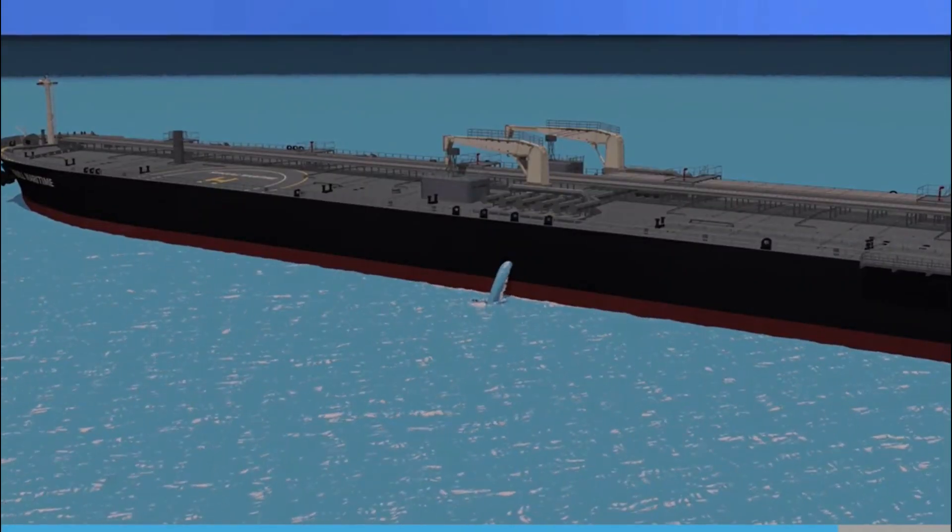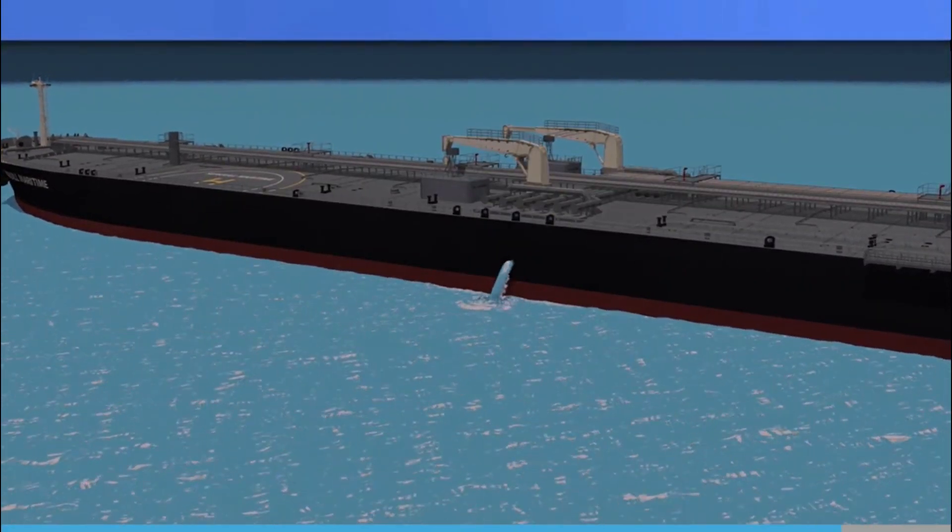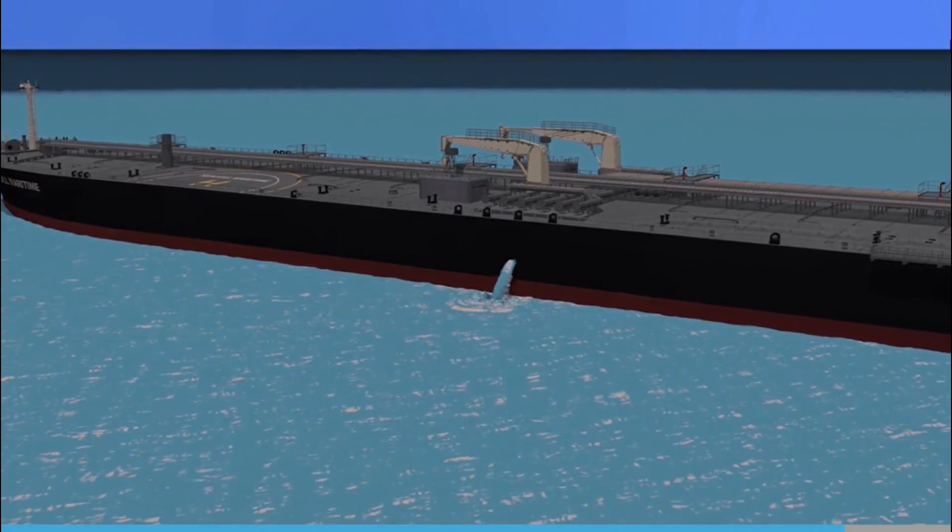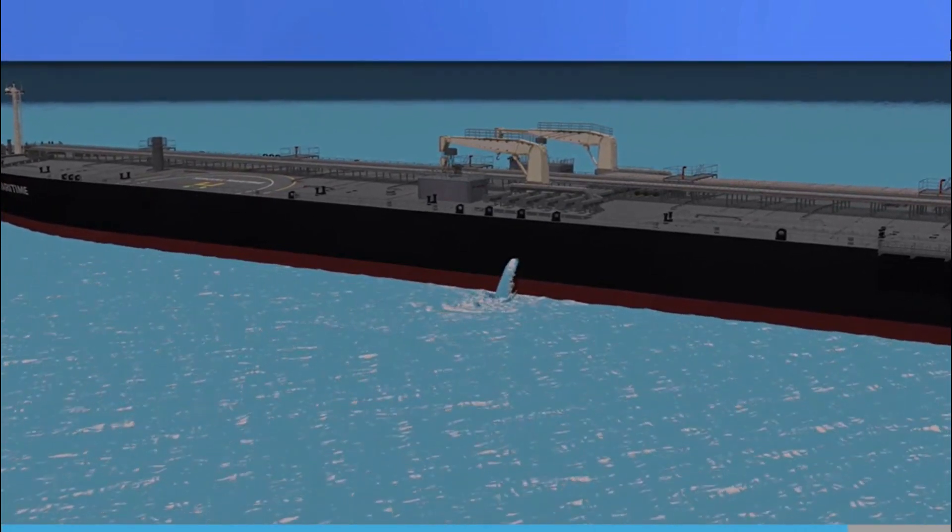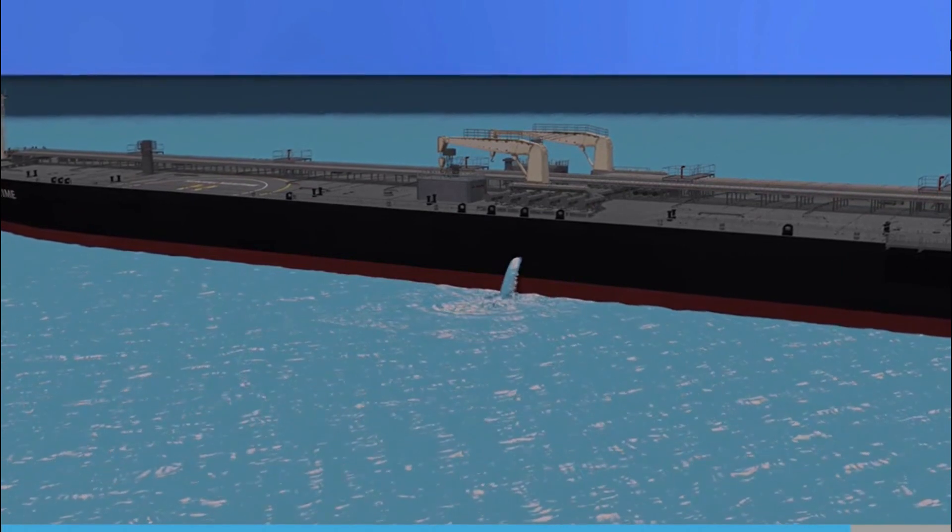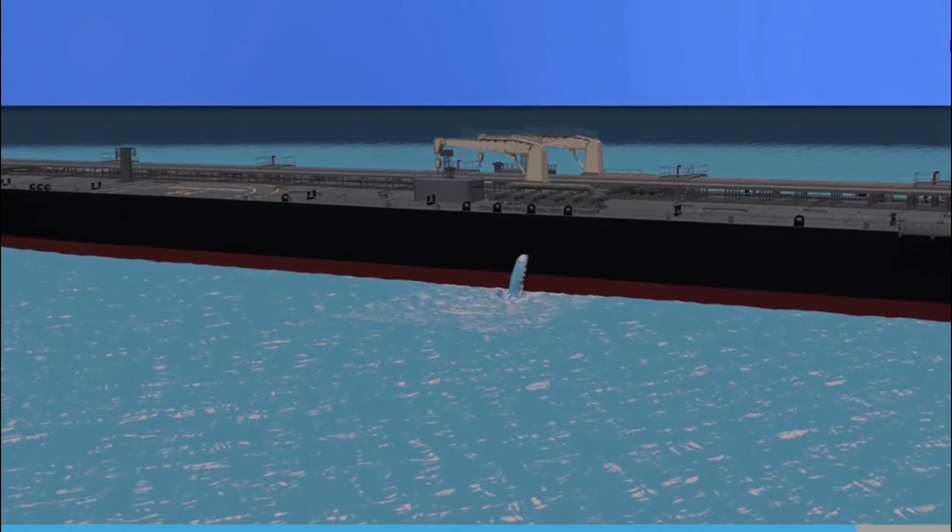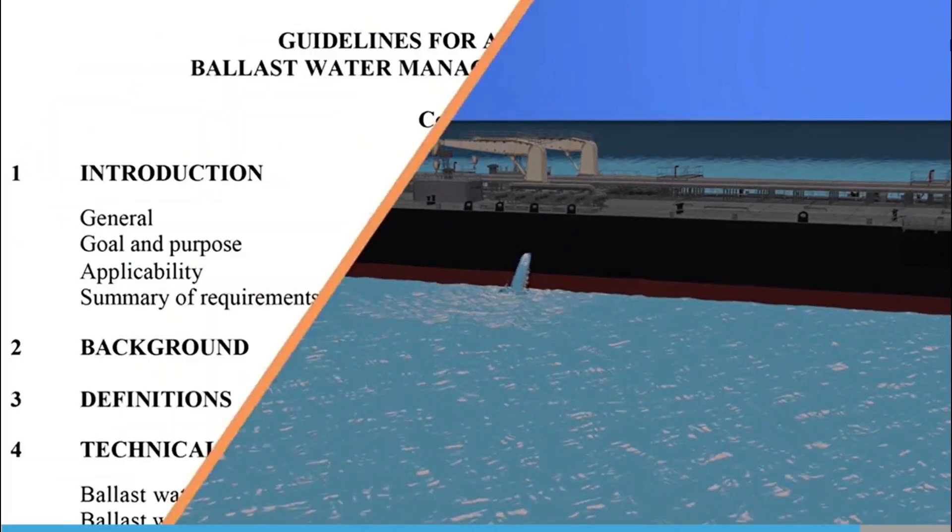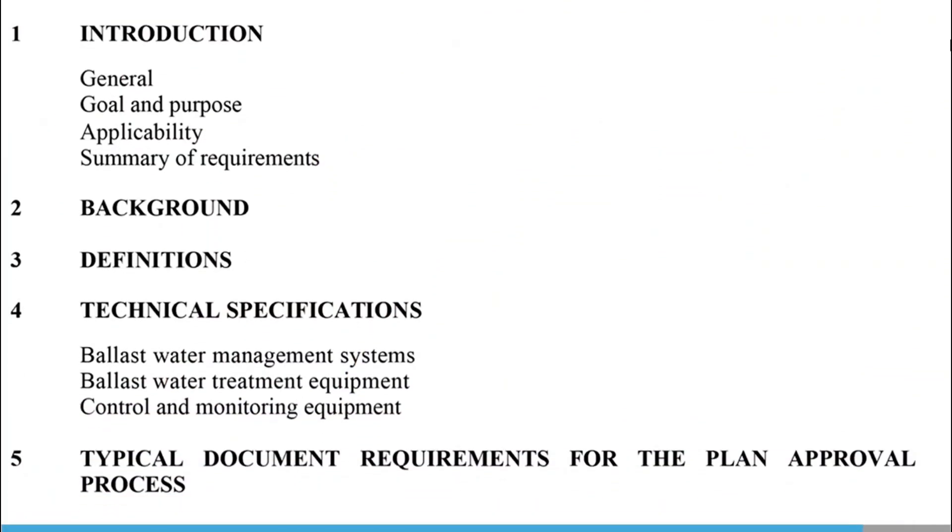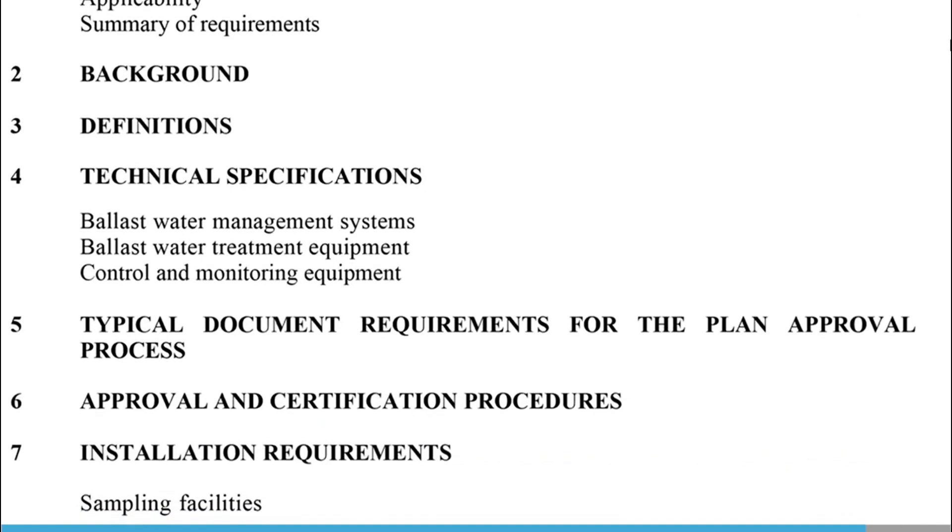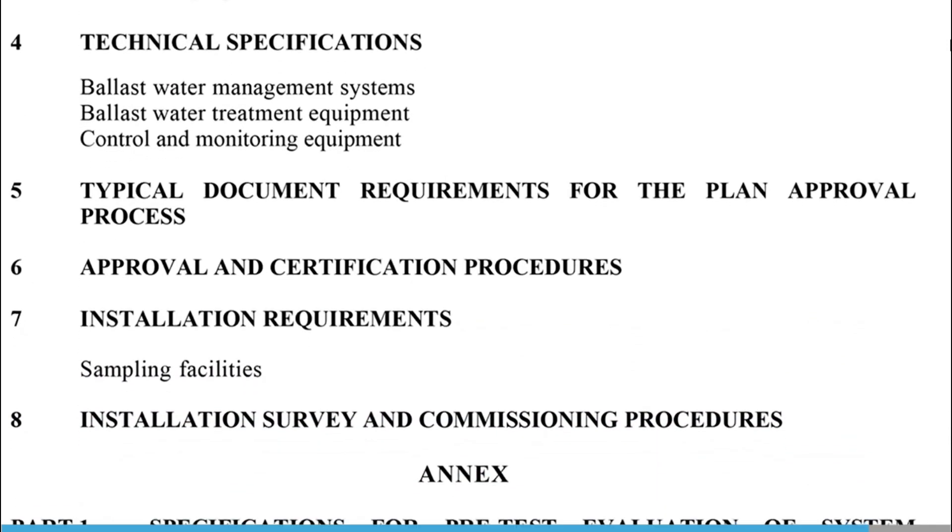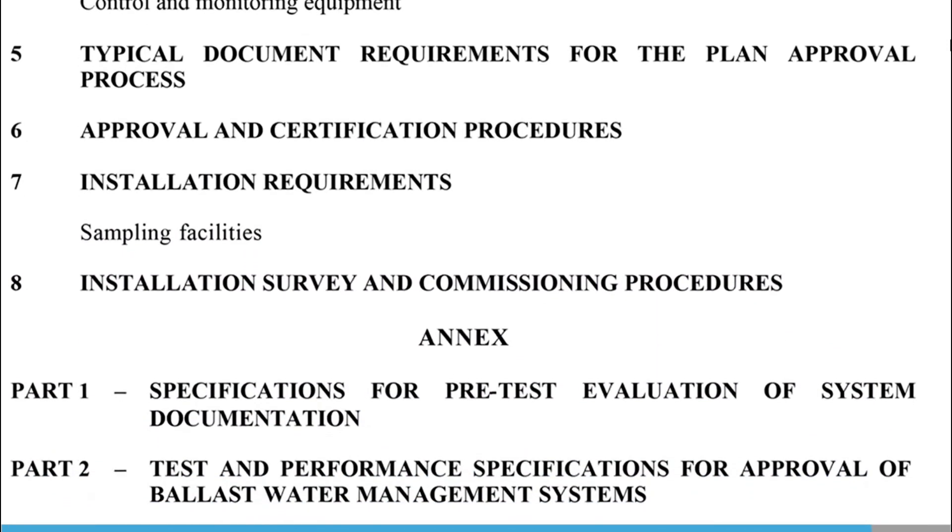A ballast water management system intended for compliance with the D2 performance standard must be of a type approved by IMO. This is done in a similar way to other types of equipment mandated for use on board a ship. The G8 guidelines for approval of ballast water management systems describes the process manufacturers must go through in order to obtain type approval.